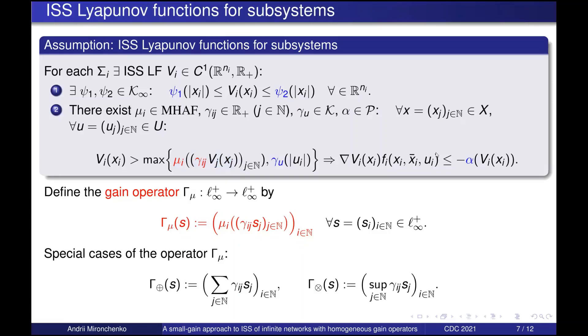Since this information is very important, we introduce such a gain operator which encodes this information. So basically its i-th component is precisely this term but with s_j instead of this term. And s is here arbitrary vector in L infinity plus. If all mu_i's are sums then our gain operator is of this form. If all mu_i's are maximum then this will be the gain operator.